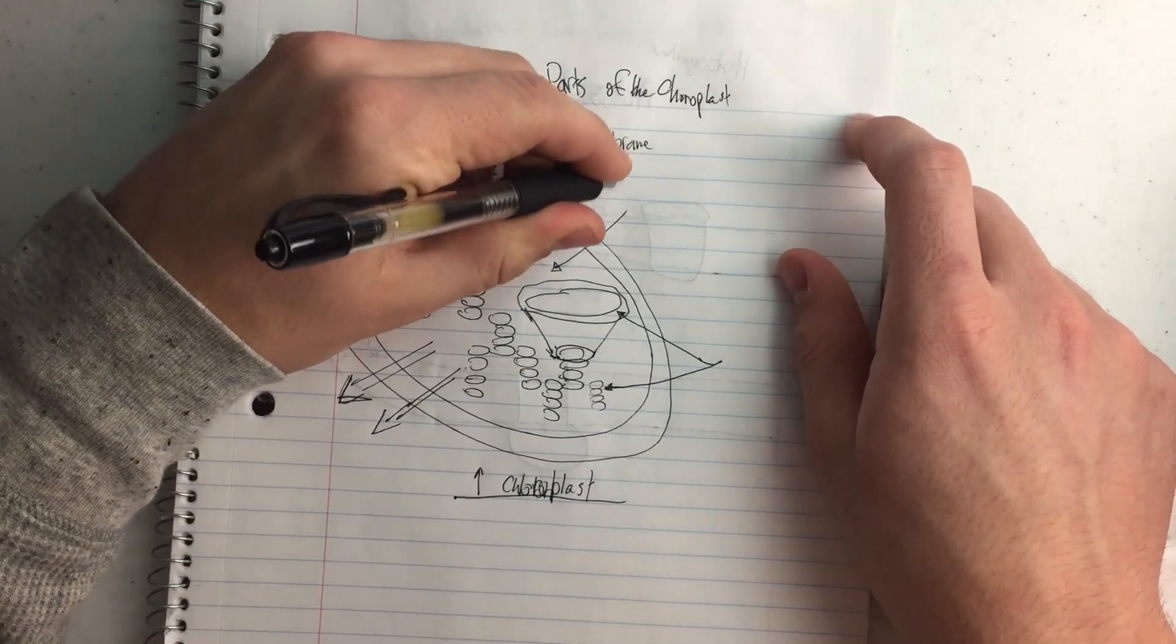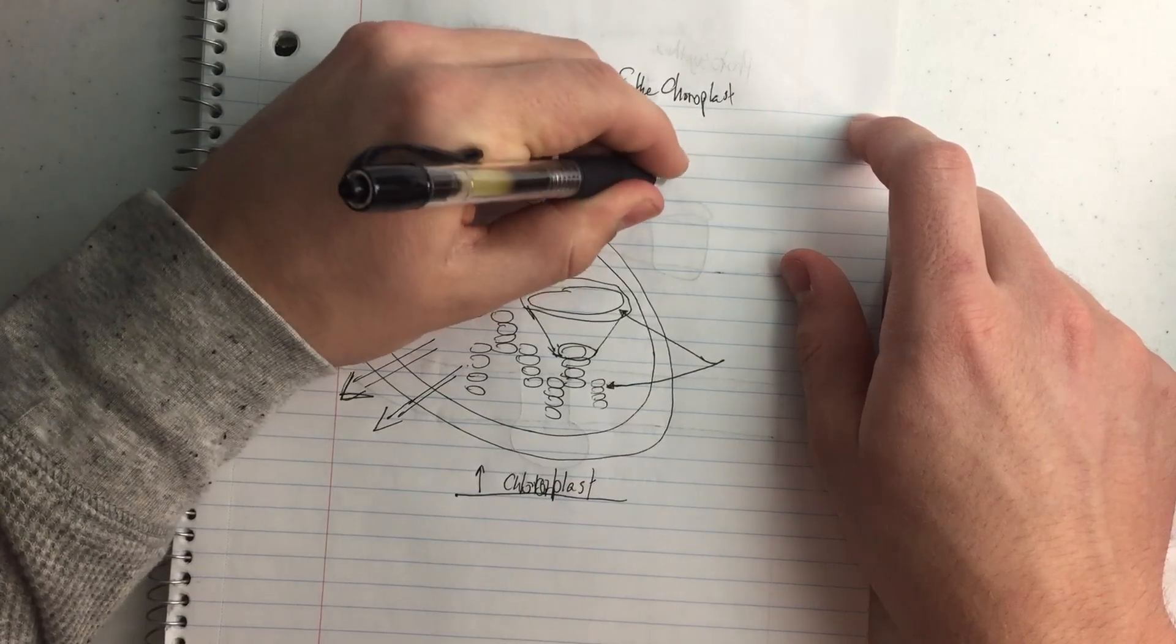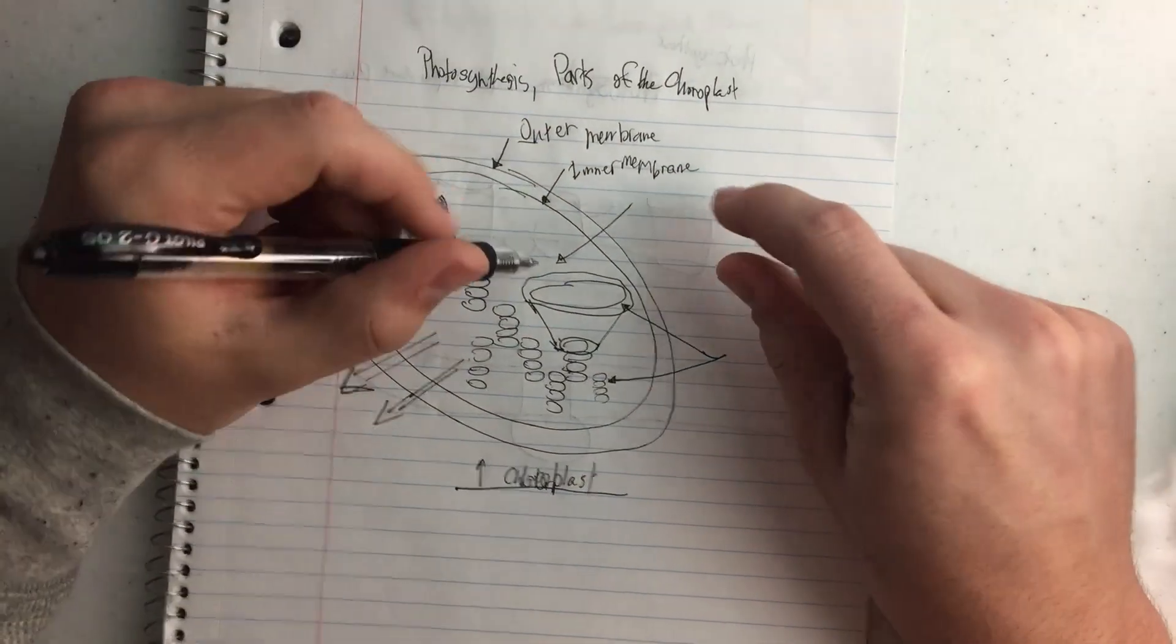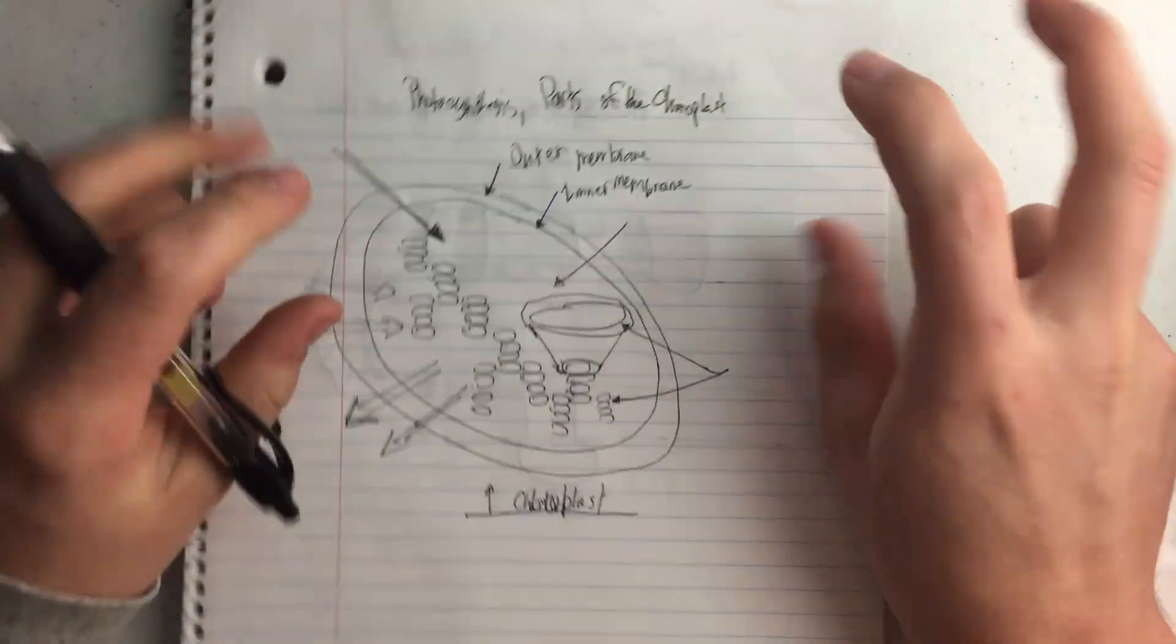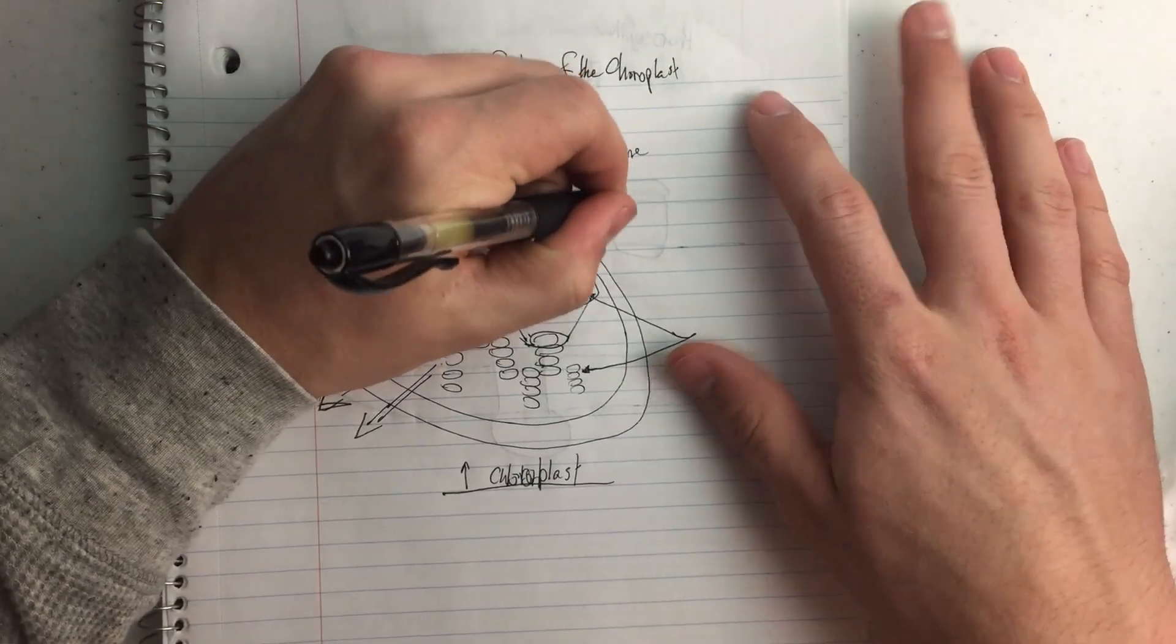And then the inside intracellular space of the chloroplast is called the stroma.